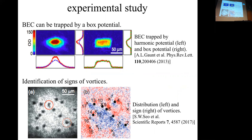Next, I introduce an experimental study. A BEC can be trapped by a focused potential like this, so the formation of the Onsager vortex can be studied by using a uniform potential. In addition to this, by using the Bragg scattering technique, the sign of the vortices can be detected. Thus, whether the vortices are formed or not can be confirmed experimentally.